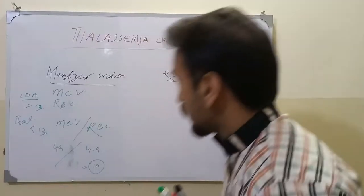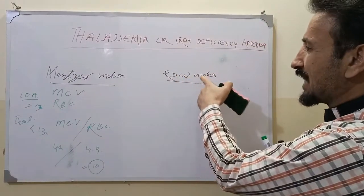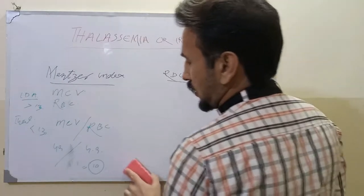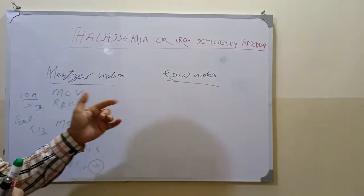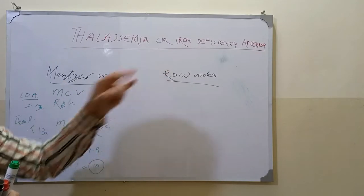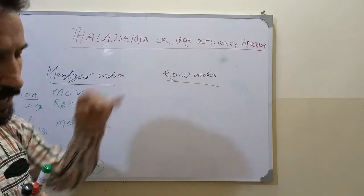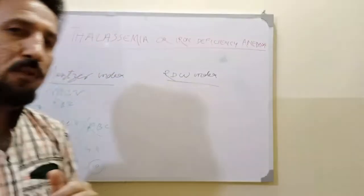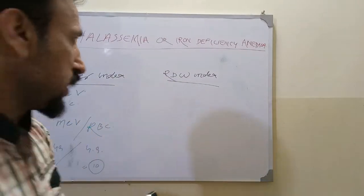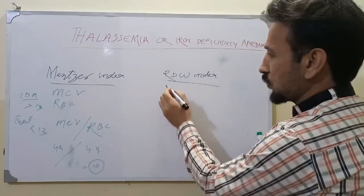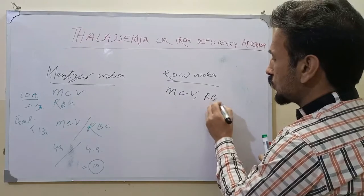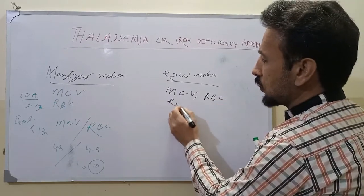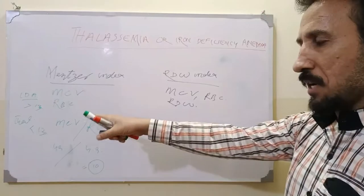There is another index called the Red Cell Distribution Width Index. We commonly use the RDW for differentiation of iron deficiency anemia and thalassemia, but this index is more accurate. It takes into account the MCV of the patient, the RBC count, and the RDW.